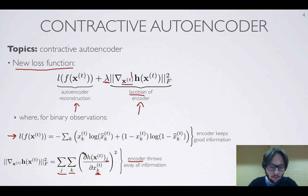That's because a way to minimizing the squared of the partial derivative is to have a partial derivative of 0. If the partial derivative is 0, it means that if I change the value of x, it actually won't change the value of the hidden unit.